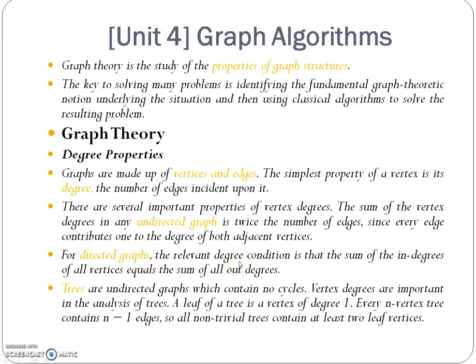Similarly, for a directed graph, the degree condition is that the sum of the in-degrees of all vertices equals the sum of all the out-degrees. That means the in-edges into vertices and the out-edges from vertices are going to be equal.